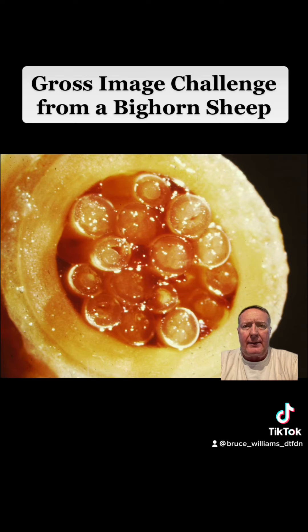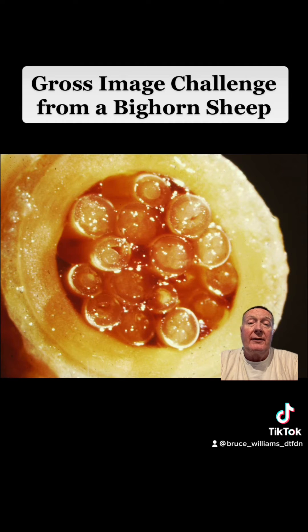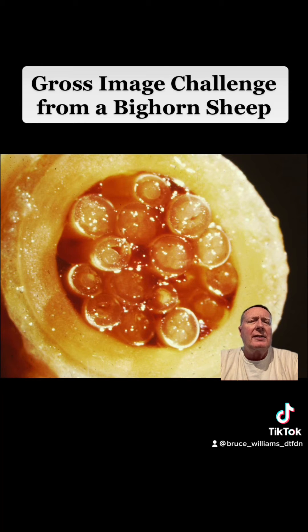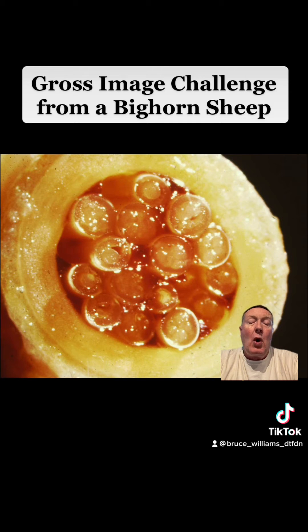Elaeophora schneideri. It's a really amazing life cycle. Elaeophora schneideri is a worm that usually lives in black-tailed deer, and in the black-tailed deer it doesn't cause any problem. But when it gets into alternate hosts like Rocky Mountain sheep, bighorn sheep, or elk, it can cause a very devastating disease.